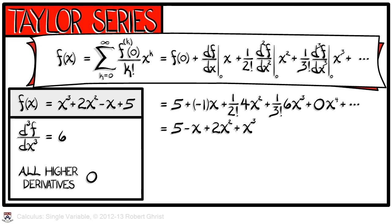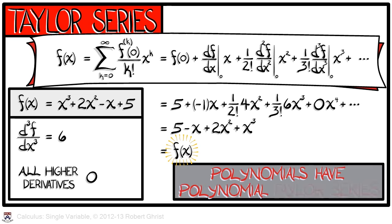Let us take a look at our work. Do we believe what we have done? Well, of course, this is exactly the same function that we started off with — we've merely written the terms in ascending order of degree. This seems like a trivial example, but it is actually very crucial. You must remember that polynomials have themselves as the Taylor series. This is going to connect to some very deep properties concerning polynomial approximation.